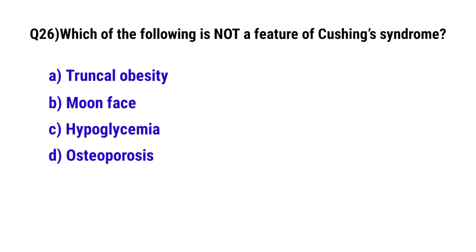Question number 26: Which of the following is not a feature of Cushing's syndrome? The correct option is C: hypoglycemia.